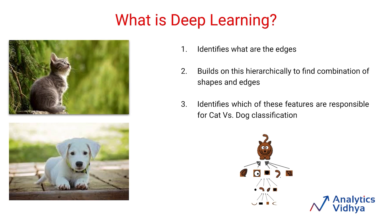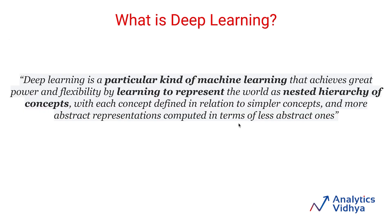And this is how a deep learning model works. In summary, deep learning is a particular kind of machine learning which learns to represent the world through a nested hierarchy of concepts. Deep learning models build these representations by themselves, and this is why they typically require huge amounts of data and large compute power. We will see this again in more detail later in the course.